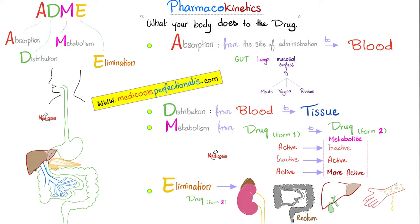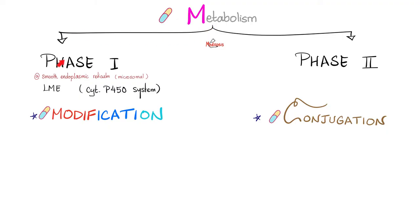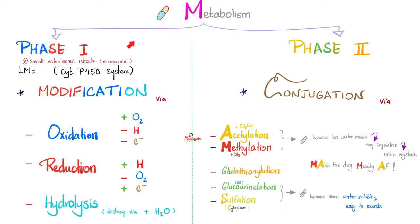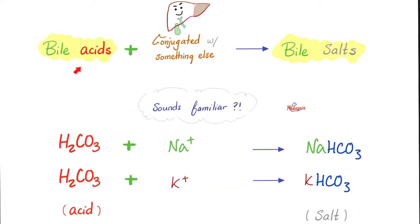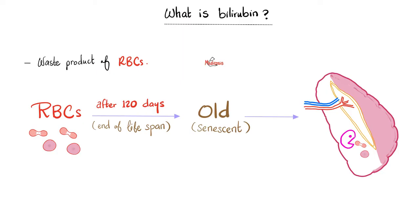Pharmacokinetics deals with absorption, distribution, metabolism, and elimination. The metabolism part consists of phase 1 and phase 2. Phase 1 is modification — oxidation, reduction, hydrolysis. Phase 2 is conjugation. Conjugation could be one of many things, including glucuronidation. The key enzyme is UDP-glucuronidyl transferase. For example, when you conjugate bile acids, they become bile salts. When you conjugate bilirubin, it becomes conjugated bilirubin. Why conjugate? To make it more water-soluble.